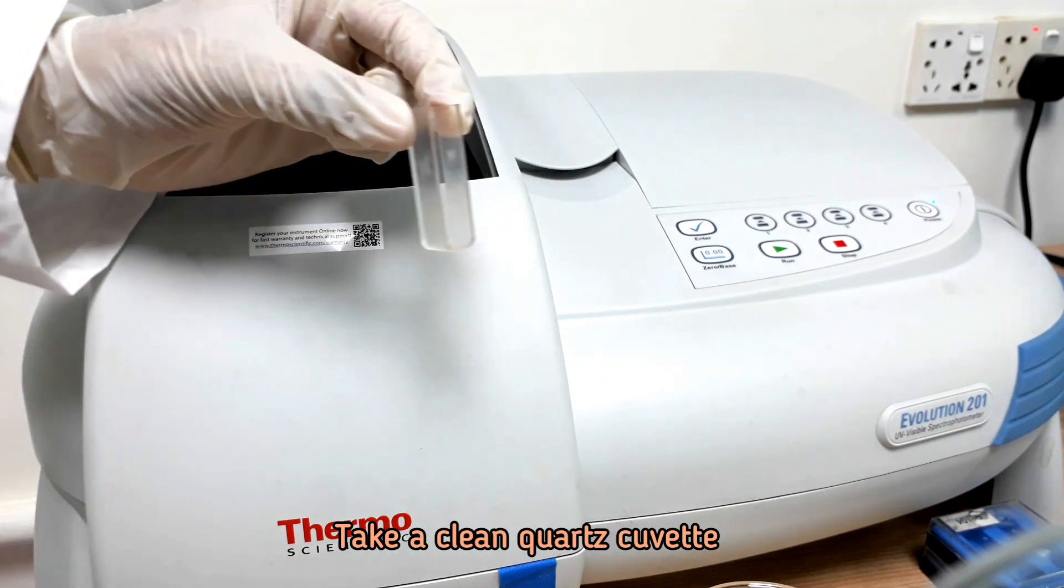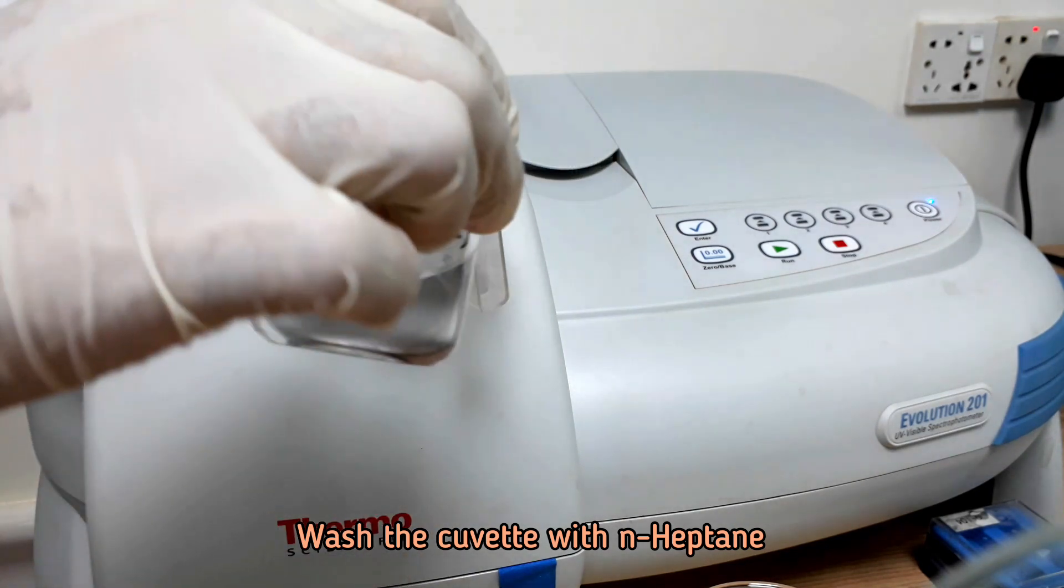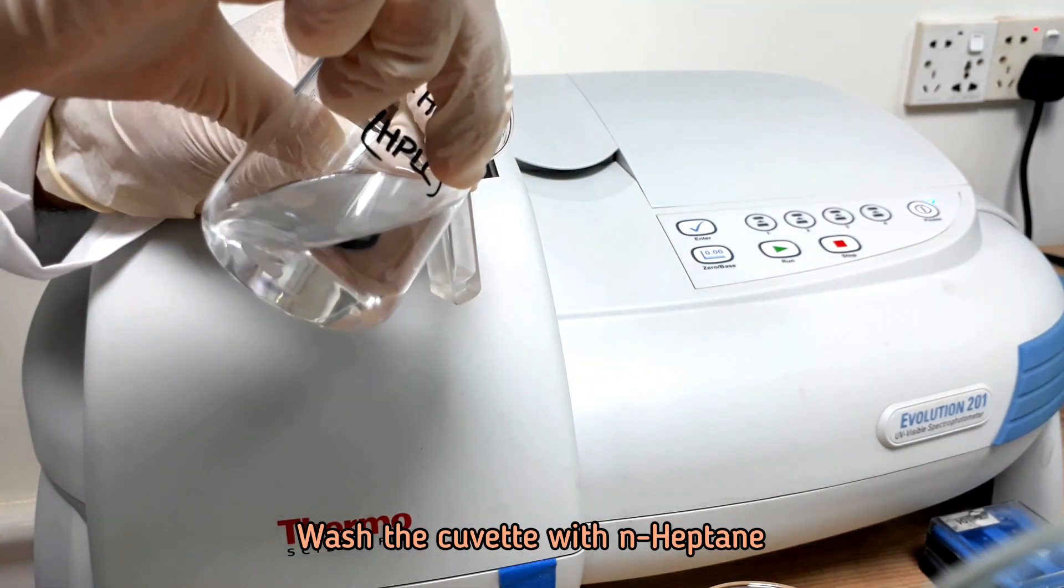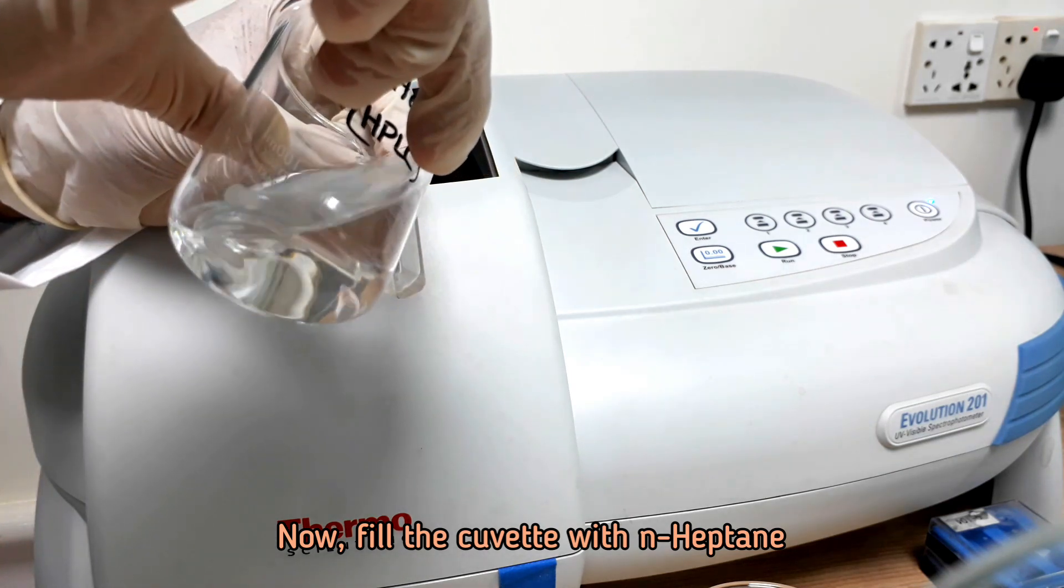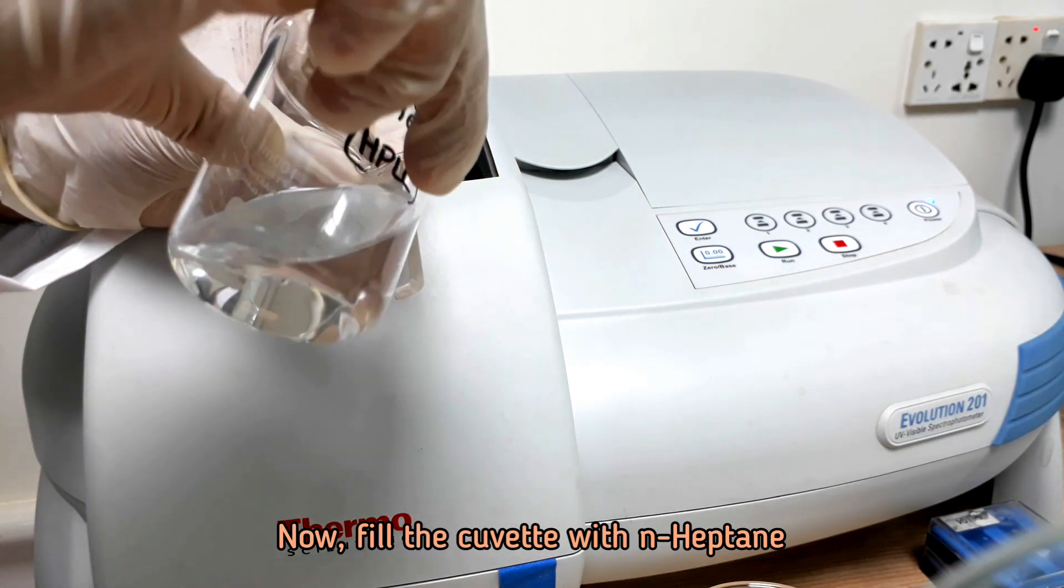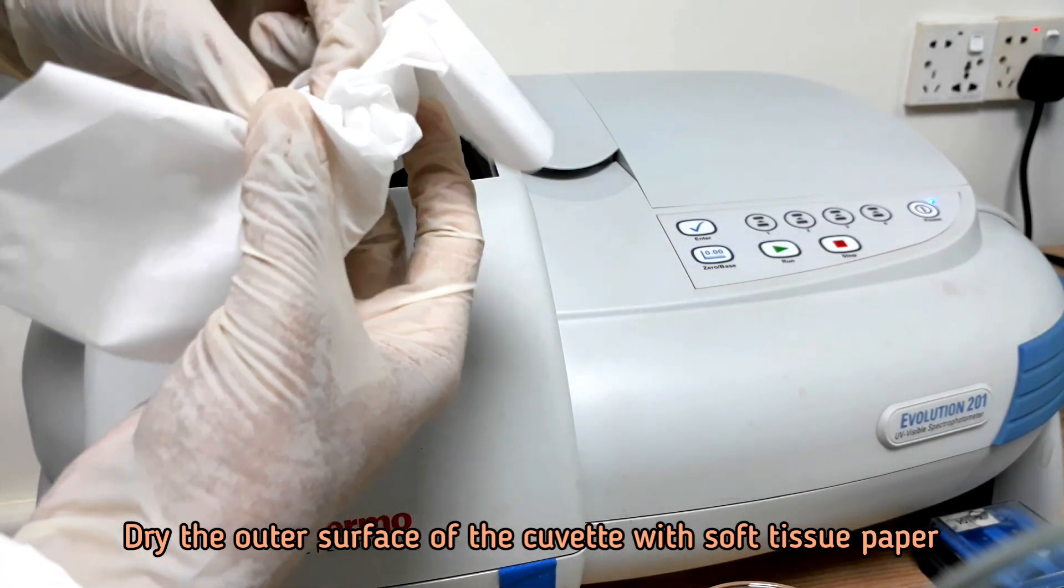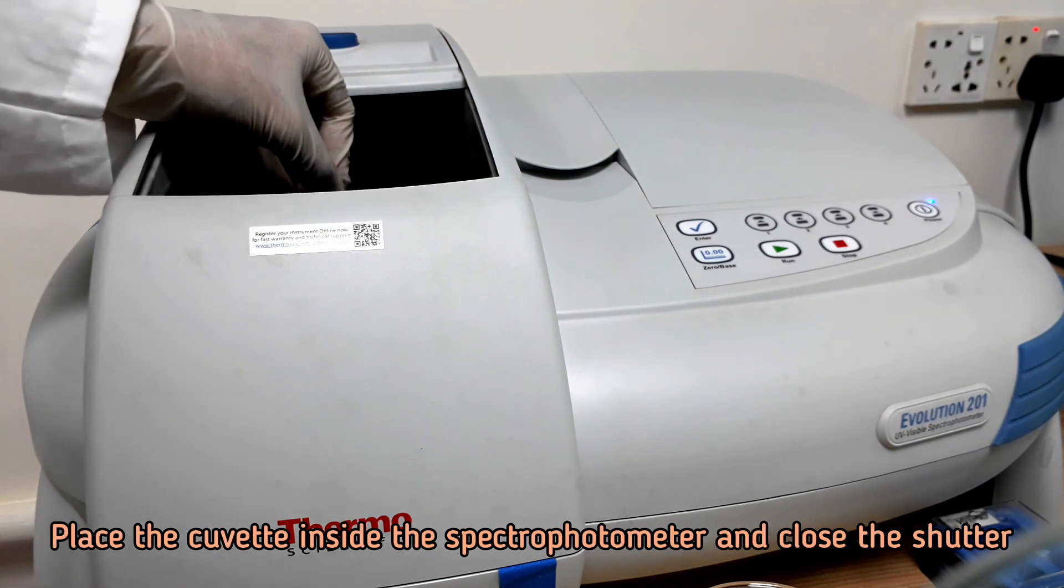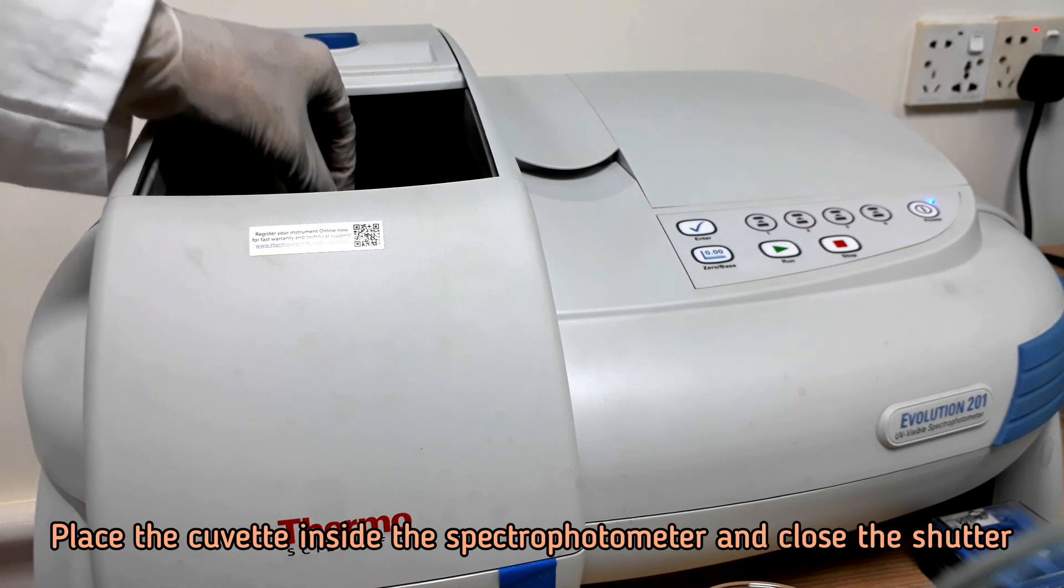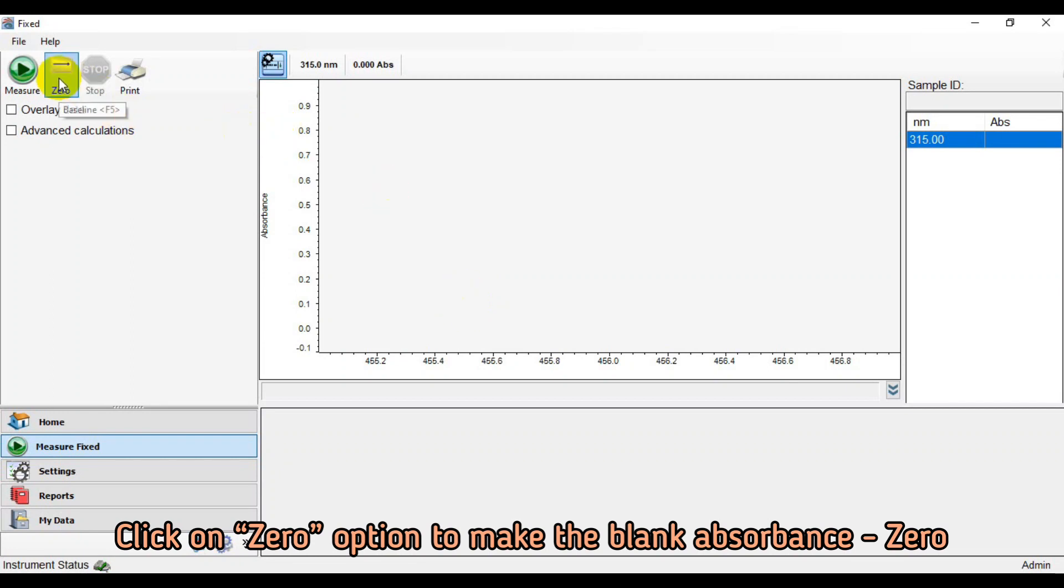Wash and fill a clean quartz cuvette with n-heptane. Dry the outer surface of the cuvette with soft tissue paper. Place the cuvette inside the spectrophotometer. Click on 0 option to make the blank absorbance 0.